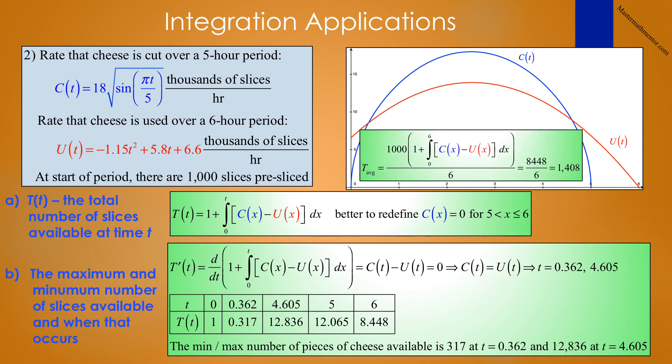Finally, an often-asked question is the average number of slices of cheese on the tray over the 6-hour period. That is the total number of slices divided by 6: 1,000 times the quantity 1 plus the integral from 0 to 6 of c(x) minus u(x) dx, all over 6. That is 8,448 over 6, or 1,408 slices of cheese on average on the tray.